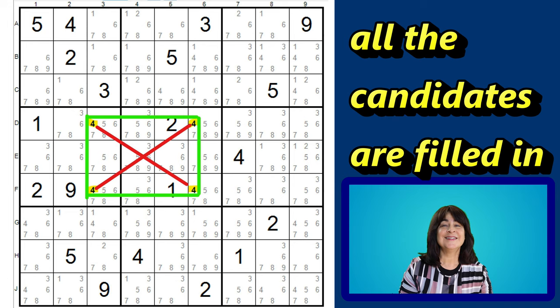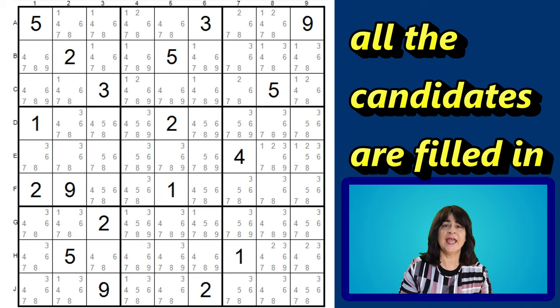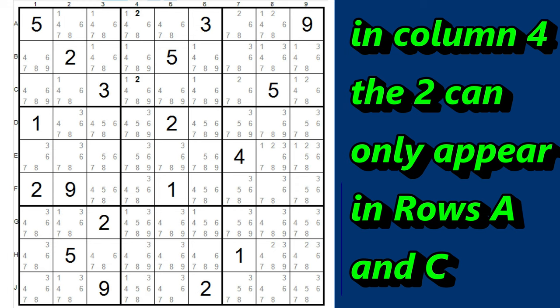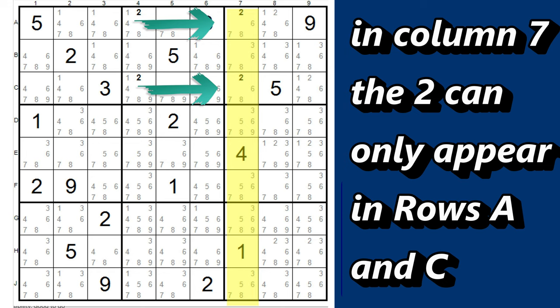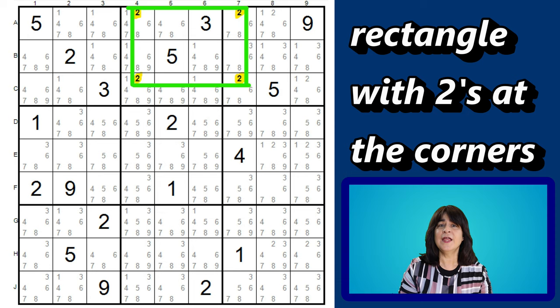We see that all the candidates are filled in, and in column 4, the two can only appear in rows A and C. But in column 7, the two also appears only in rows A and C. This creates a rectangle pattern where the corners of the rectangle all have one candidate in common, the two.